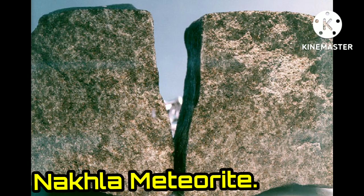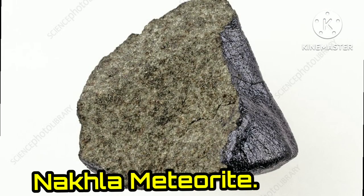Nakhla is a Martian meteorite which fell in Egypt in 1911. It was the first meteorite reported from Egypt, the first one to suggest signs of aqueous processes on Mars, and the prototype for the Nakhlite type of meteorites. Fall date: June 28, 1911.